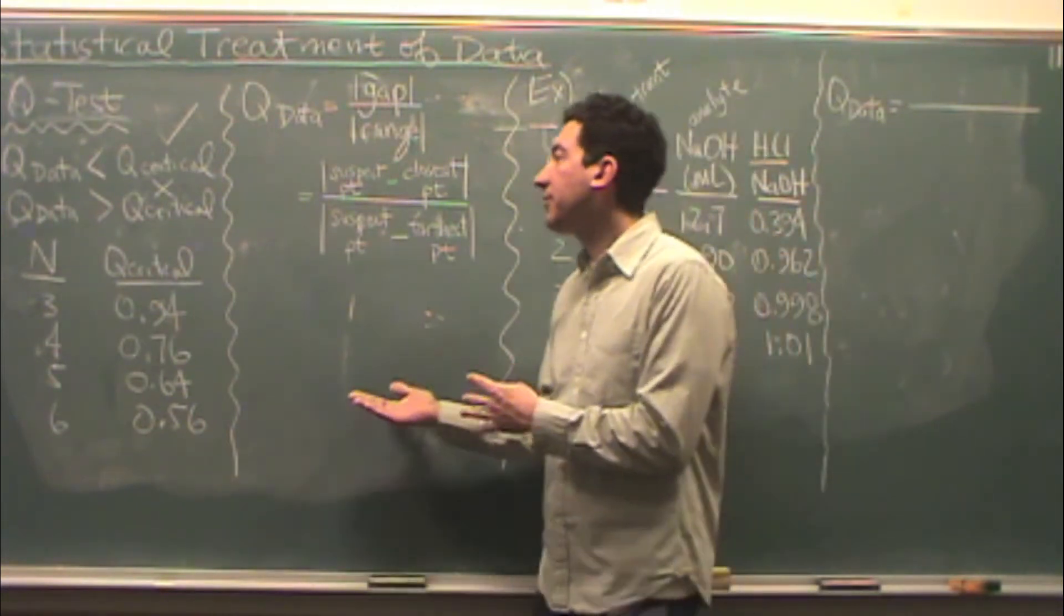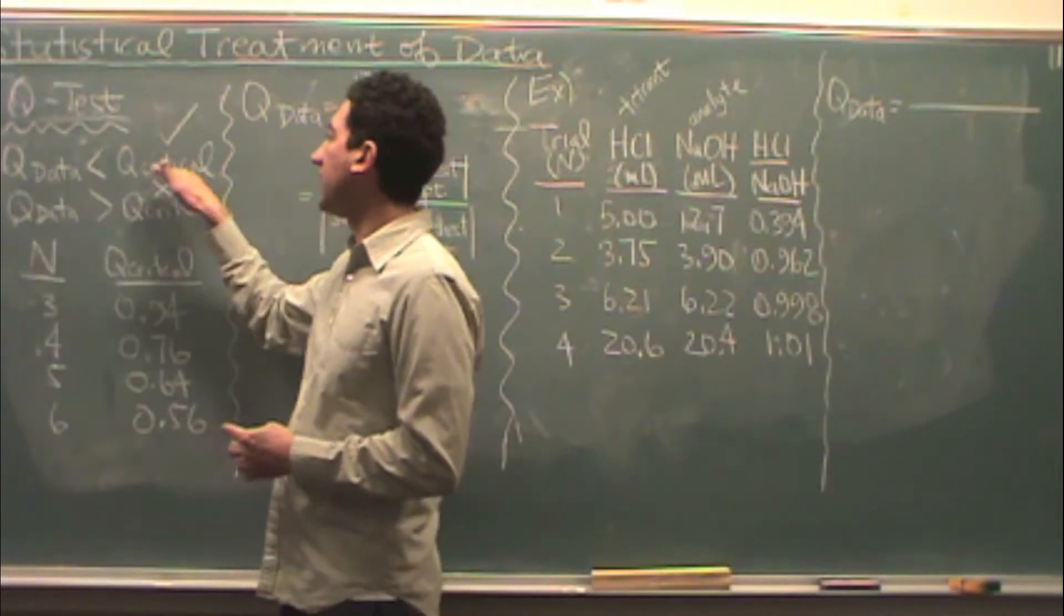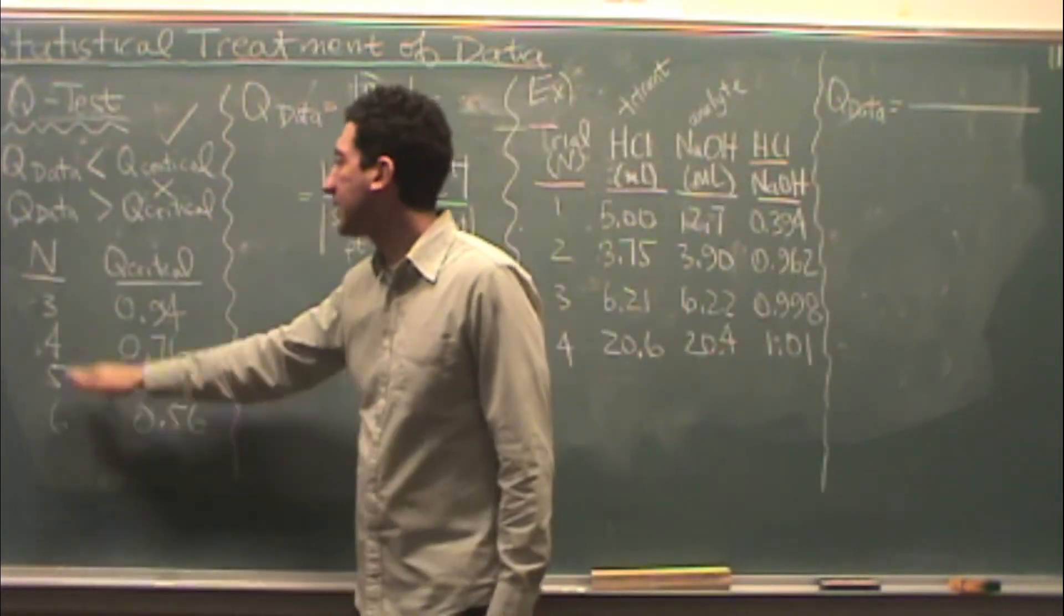So briefly in review, the Q test takes a look at two different Qs, the Q of data versus Q critical. The Q critical are tabulated values.